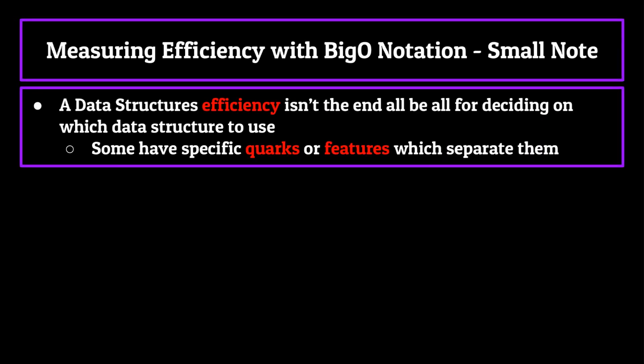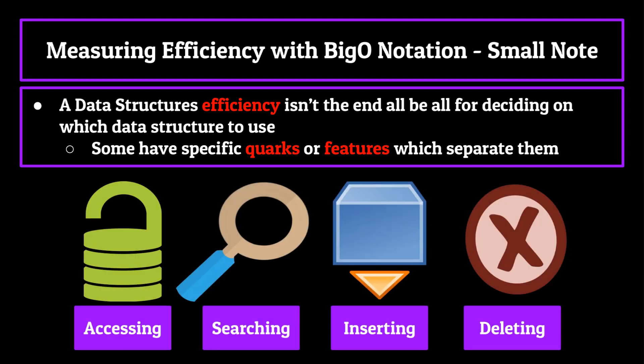Now it's important to note that this isn't the end-all be-all for deciding on which data structure to use in your program. As you'll see as the series progresses, many of the data structures were invented with specific quirks or features which separate them from the rest. Big O notation is incredibly useful and something you should definitely take into consideration when determining which data structure to implement into your program, but it should not be the only thing used to decide on a data structure.